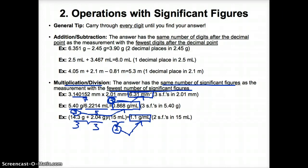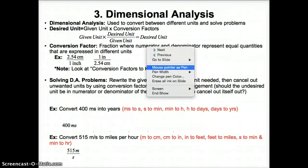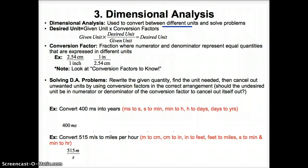So that's how to do operations with sig figs in a nutshell. For addition and subtraction, whichever quantity you start with that has the least number of decimal places tells you how many decimal places go in your answer. And for multiplication and division, whichever quantity has the fewest number of sig figs tells you how many sig figs must also go in your answer. Now let's discuss dimensional analysis — a tool used to convert between different units and solve problems.